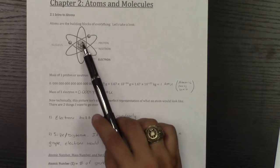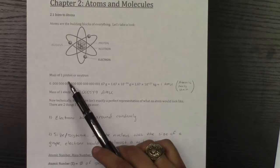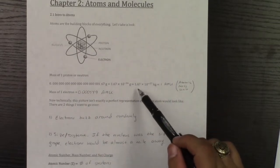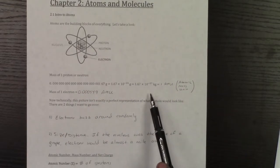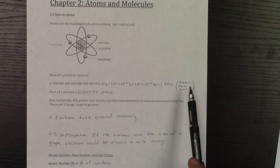Protons and neutrons are clumped here in the middle to form the nucleus. The mass of one proton or neutron is about 1.67 times 10 to the negative 27 kilograms, and we're going to call this 1 AMU, or an atomic mass unit.